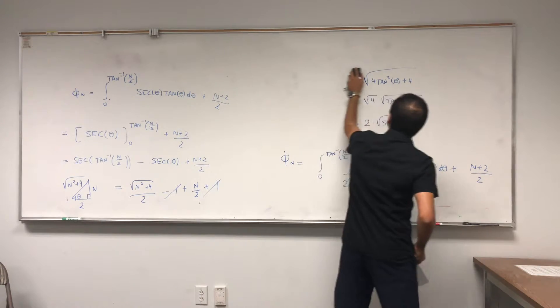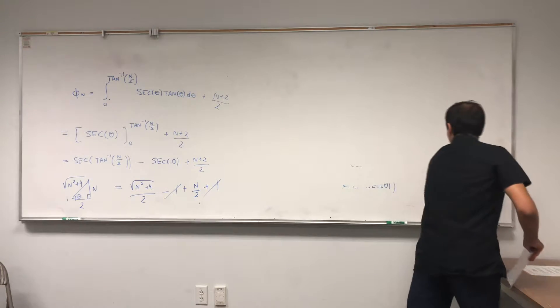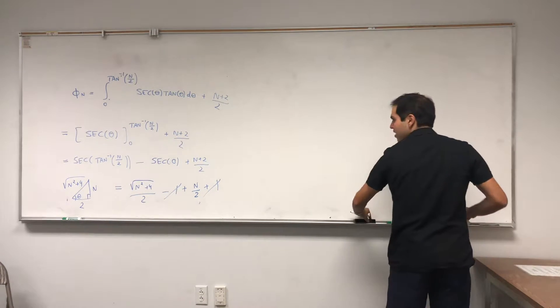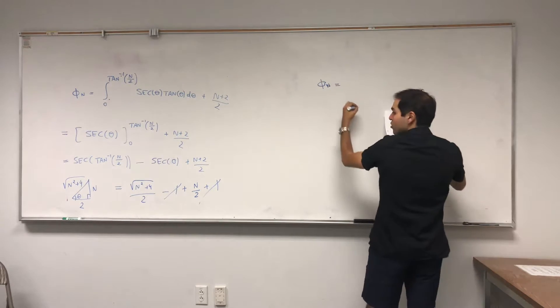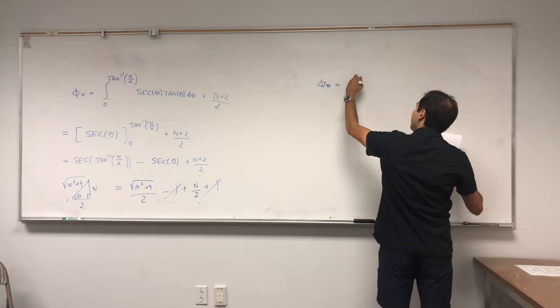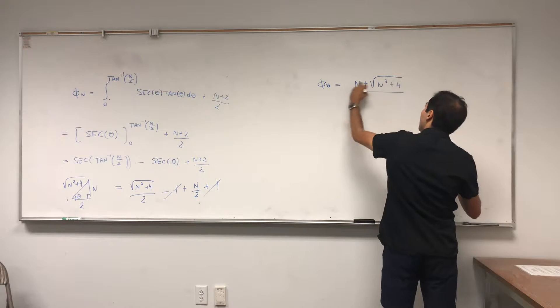So in the end what you're left with is phi n equals to just n plus square root of n squared plus 4, over 2.